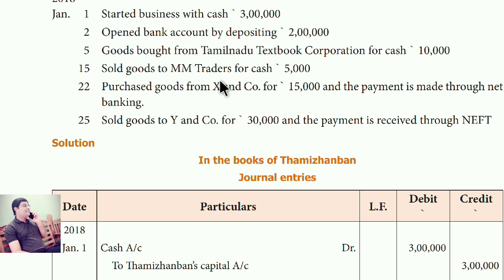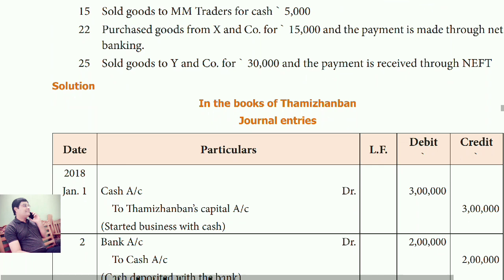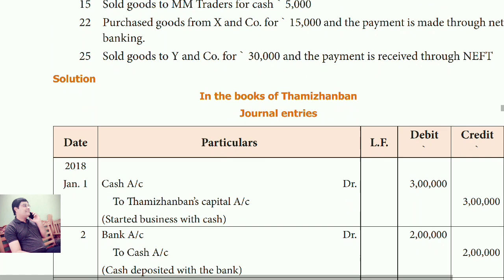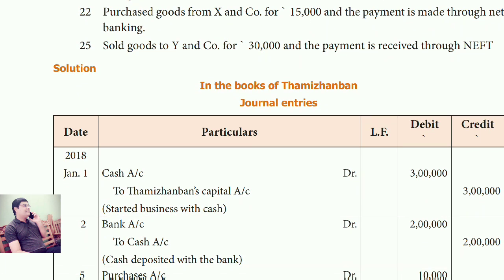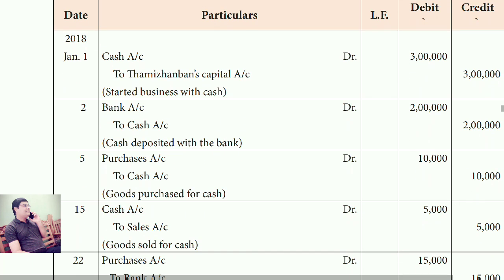Next, goods sold to MM Traders for cash. When you are selling something, cash comes in, so cash is debited. Cash is a real account — debit what comes in. Sales is a nominal account; the rule is debit all expenses and losses, credit all income and gain. When we are selling, it is income for us, so sales is credited. Entry: Cash account debit, to sales account.